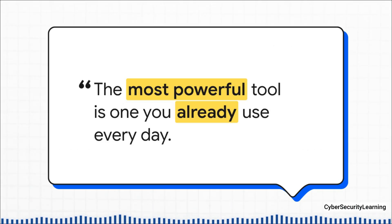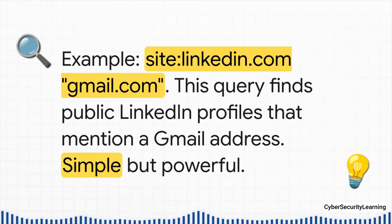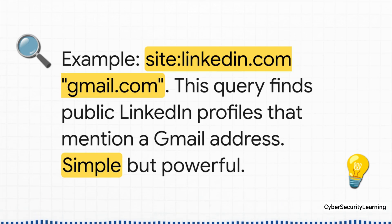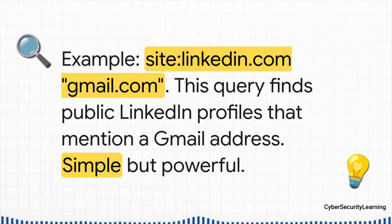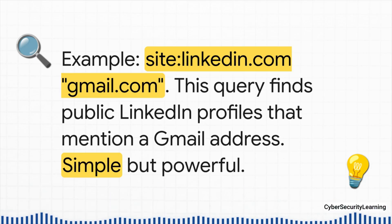But with all these fancy specialized tools, you can't forget about the most powerful one of all — Google. With the right know-how, it is an absolute beast for this. This is an example of what's called Google dorking — using special commands to tell Google exactly what you want. A search query like "site:linkedin.com gmail.com" tells Google to only look at LinkedIn and find every page mentioning gmail.com. What you get is a massive list of public LinkedIn profiles where people have put their personal Gmail address out there for the world to see. It's shockingly simple and incredibly powerful.